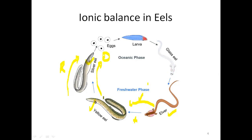In freshwater the kidneys excrete lot of water, but in the ocean they need to eliminate a lot of salts. The kidneys need to start functioning in the opposite direction. The chloride-secreting cells, which in freshwater reabsorb salts to prevent salt loss, now when the eel is entering the ocean need to excrete the excess salts entering the body.